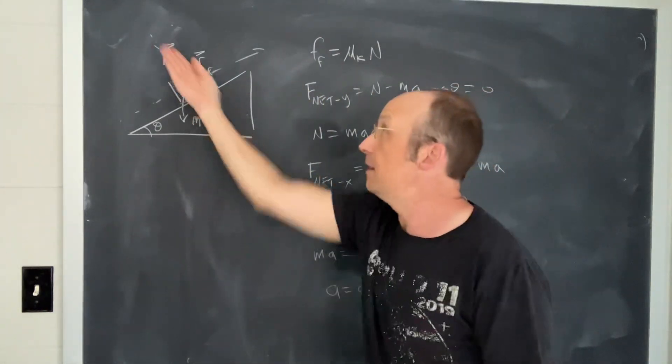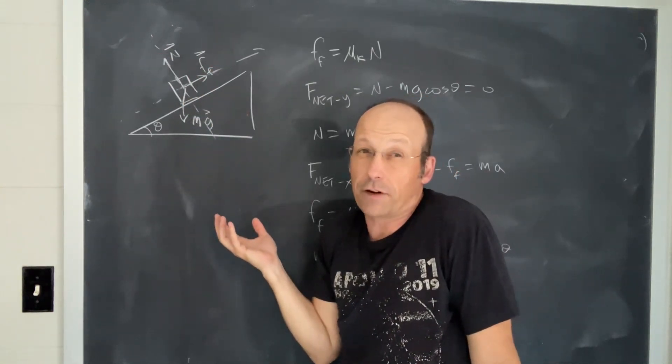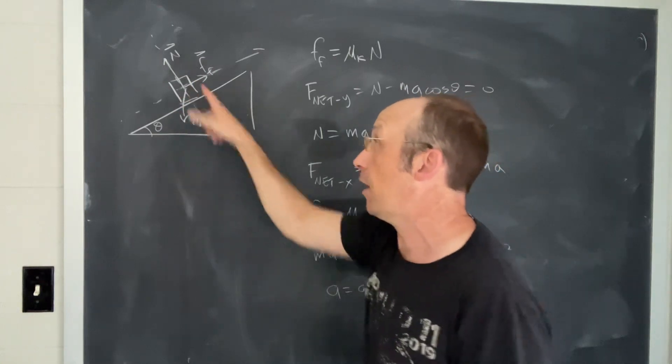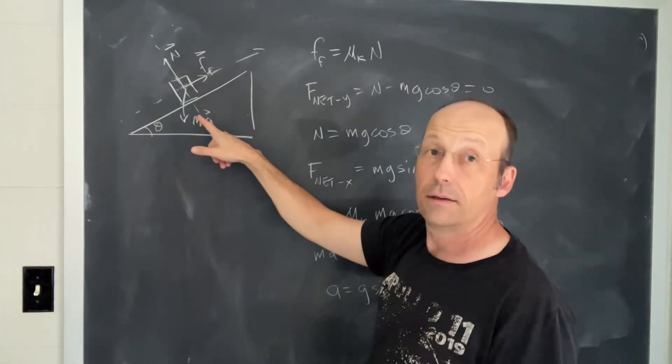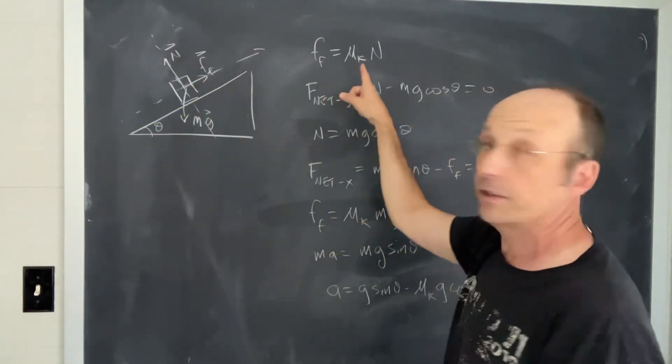Now, in this direction, the forces have to add up to zero because there's no acceleration that way. So I have a component of the weight and the normal force, but the important thing is if I increase the mass, I increase the normal force, which increases the friction.